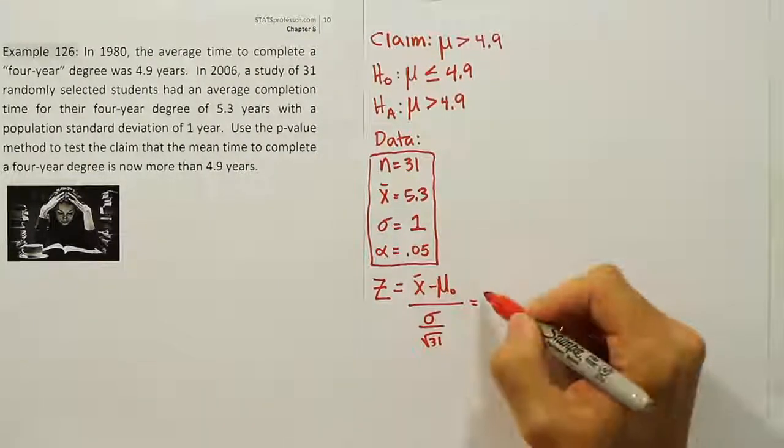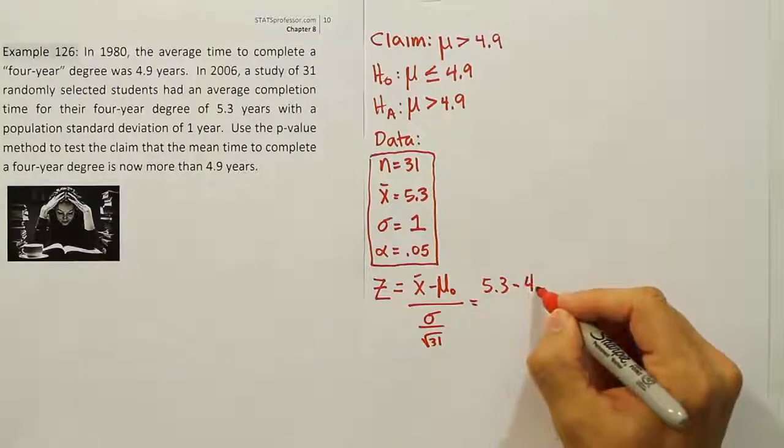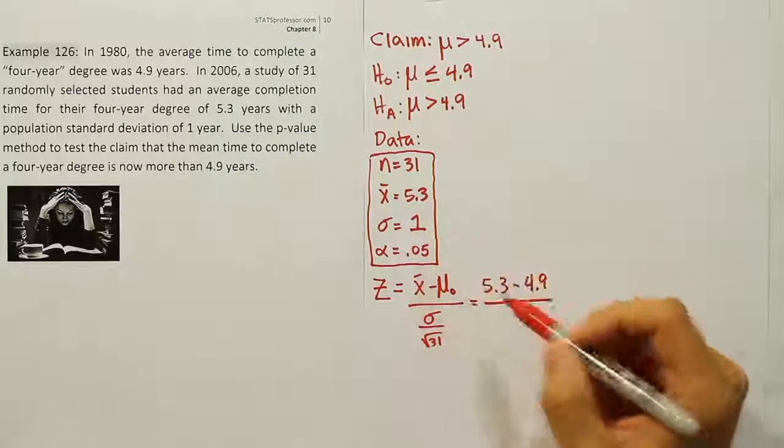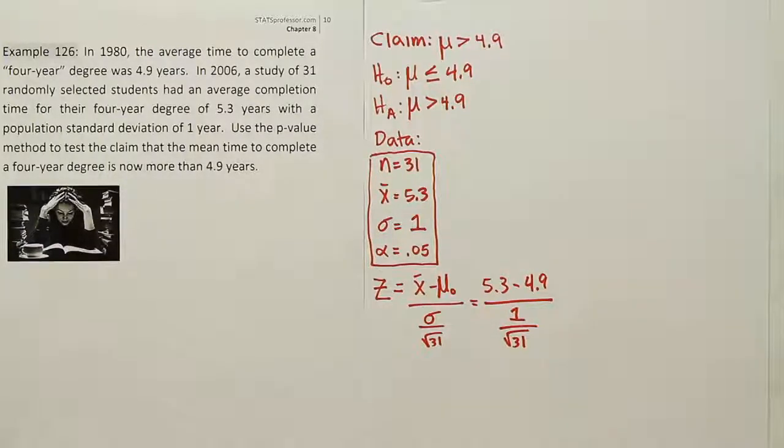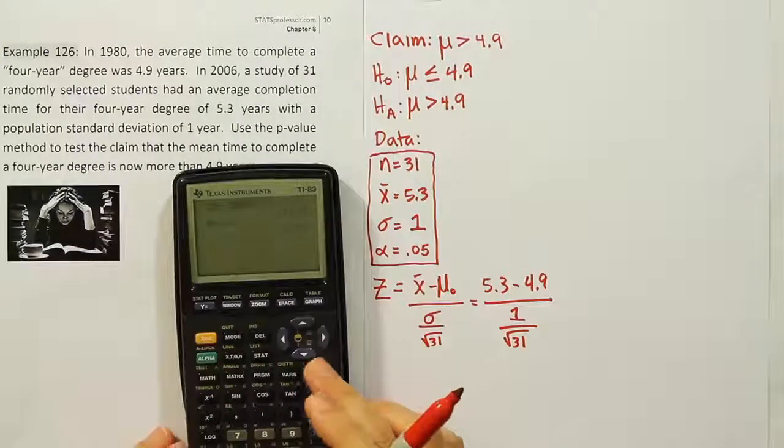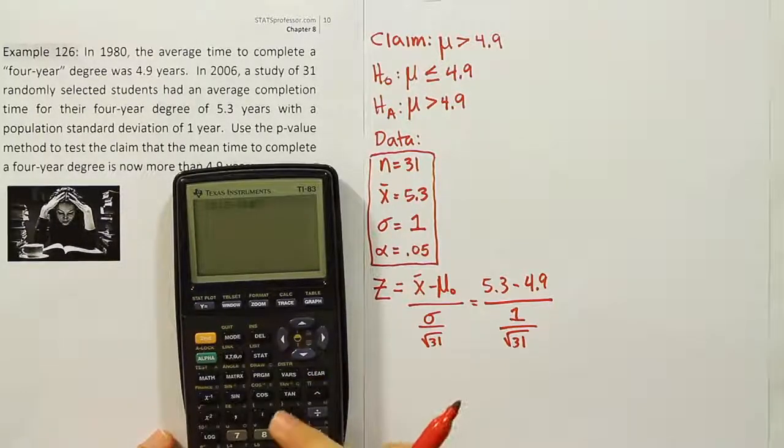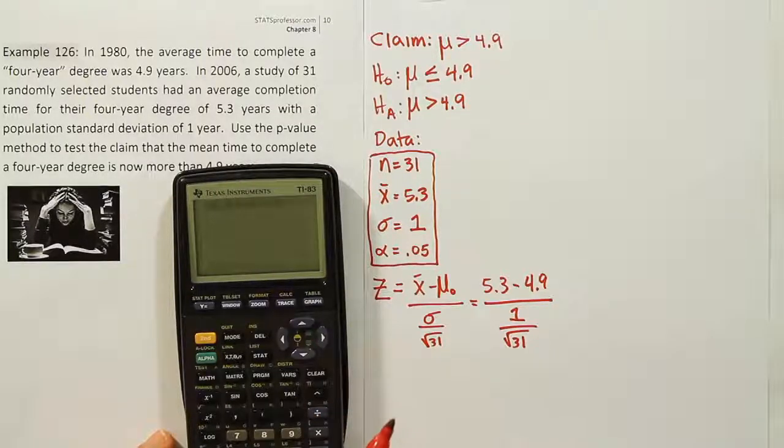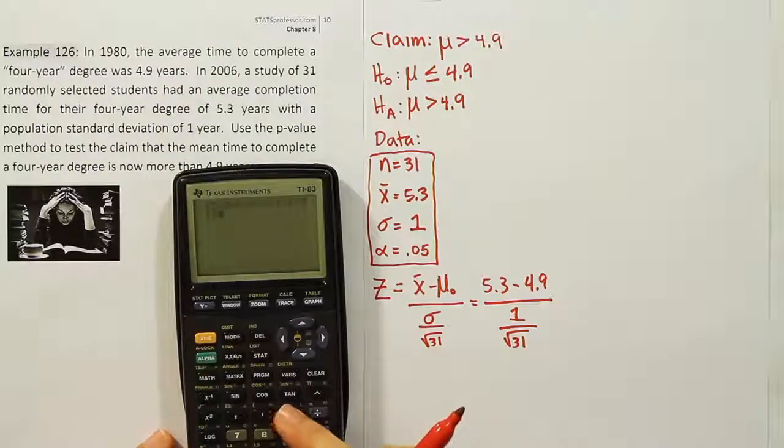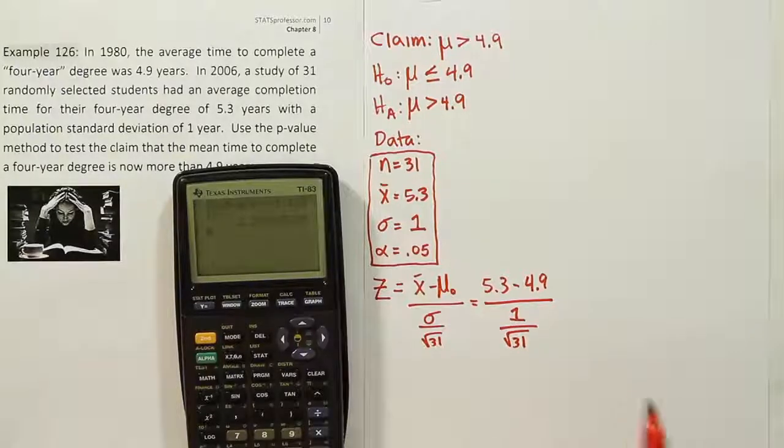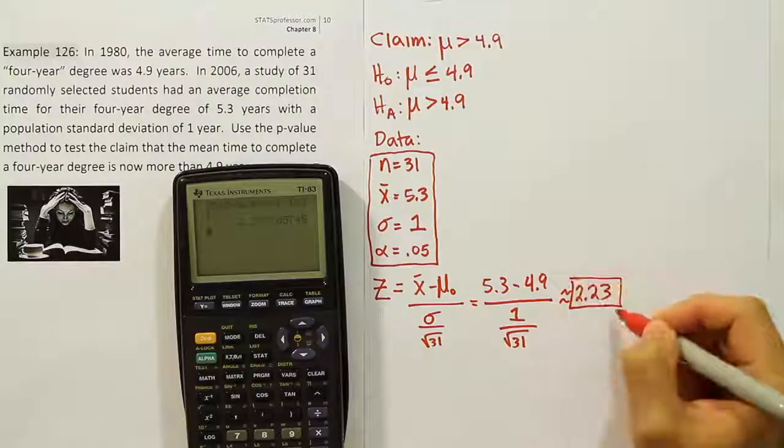The sample mean is 5.3, the value from the null hypothesis is 4.9. We divide by the standard deviation, which is 1, then divide by the square root of 31. Let's enter that in the calculator. Parentheses 5.3 minus 4.9, close it up, divide by, open parentheses, 1 divided by the square root of 31, and close that up. When we're done, we get approximately 2.23, and that's your z-score.